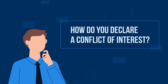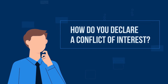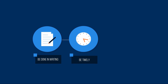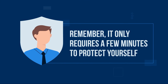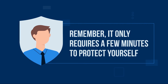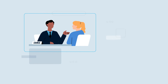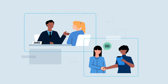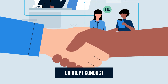So, how do you declare a conflict of interest? Your agency should have a process in place. But, in a nutshell, it should be done in writing, be timely, and be accurate. Remember, it only requires a few minutes to protect yourself. After all, a public official who takes advantage of a conflict of interest to obtain a benefit for themselves or someone close to them is probably engaging in corrupt conduct.